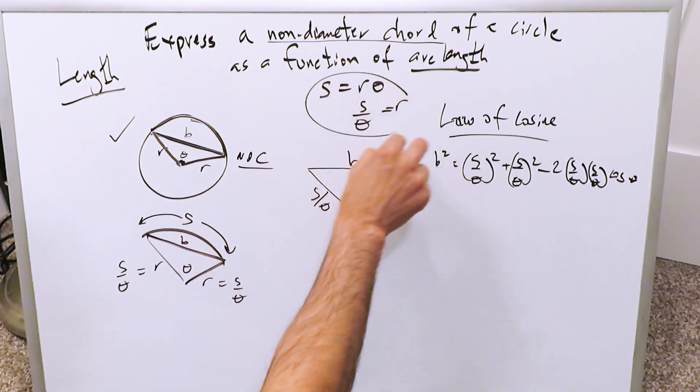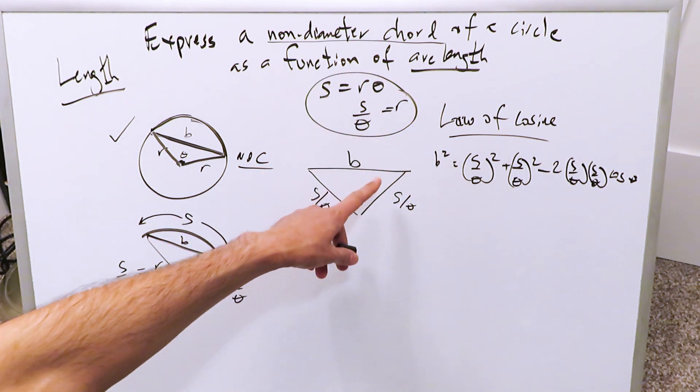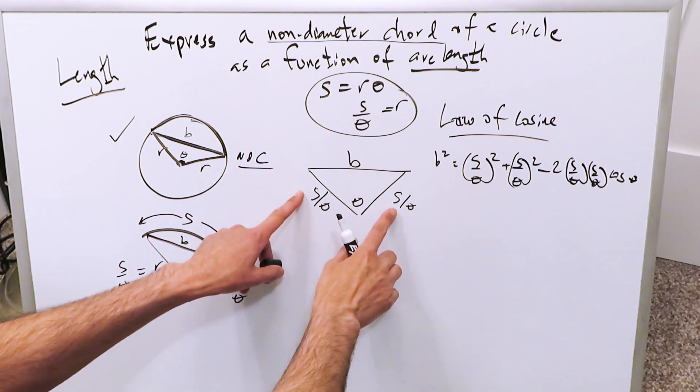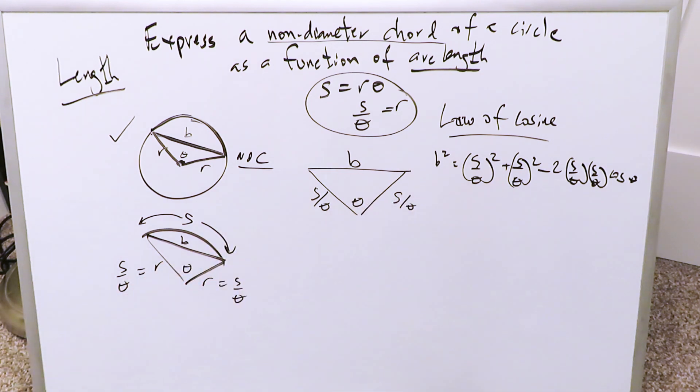How is it a function of arc length? Because we're seeing the variable S pop up here in this representation.